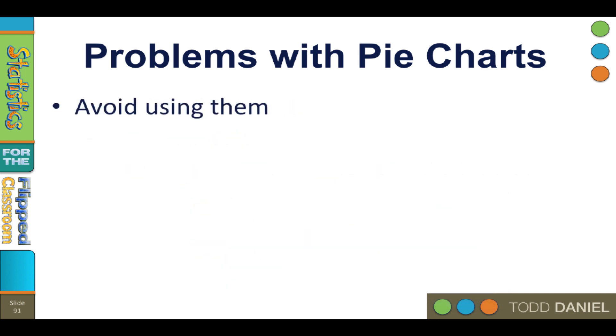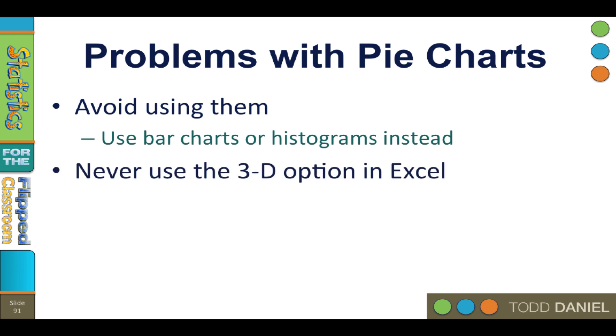Generally, avoid using pie charts. As Walter Hickey said, the pie chart is easily the worst way to convey information ever developed in the history of data visualization. Almost every time your best bet is going to be to use a bar chart. And never use the 3D option in Excel.